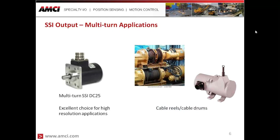Another application would be cable reels and cable drums — cranes, ship loading and unloading, crane applications, gantries. There's going to be some sort of roll or cable as that hoist goes up and down. The encoder can be mounted to the same axis as the cable drum, and because it's a multi-turn encoder, we can monitor the amount of payout of that material on the cable drum, whether connected directly to the shaft or using a cable reel assembly.